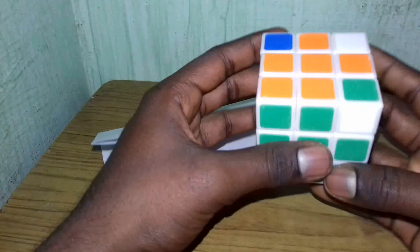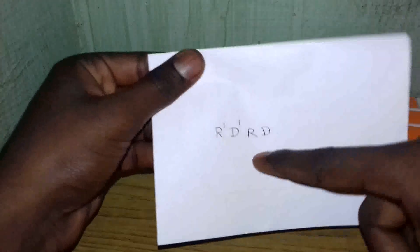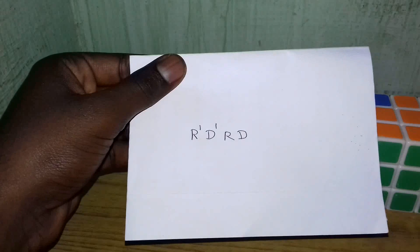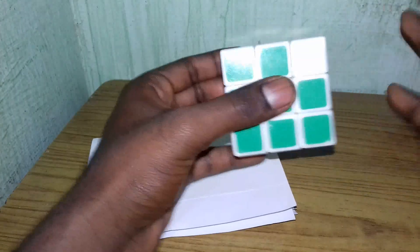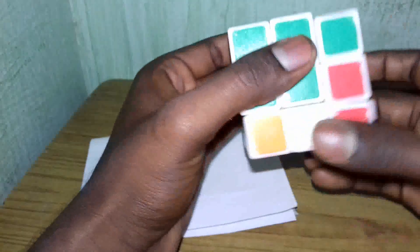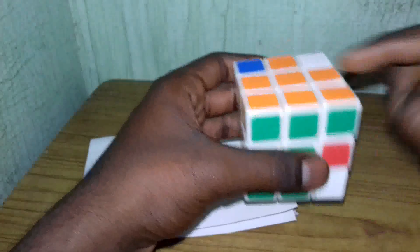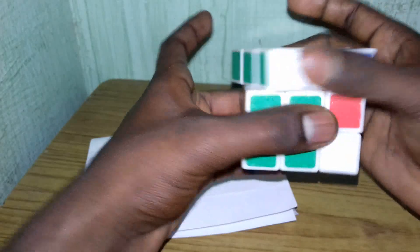You can use the formula: Right, Down, Right, Down, Right, Down. This will be the same formula. Once you use the formula, you can find the correct position. The formula will be: Right, Down, Down, Right, Down — Right Inverse, Down Inverse, Right, Down. This match is the same.